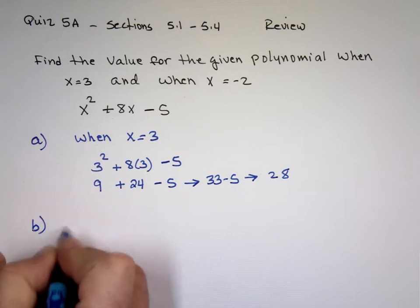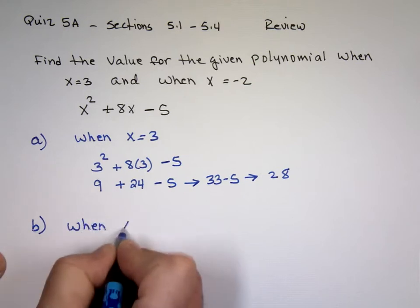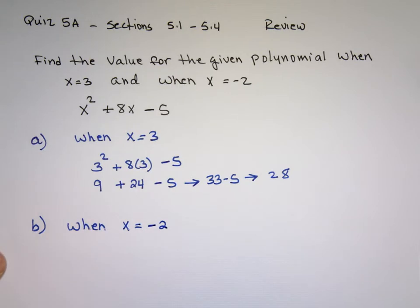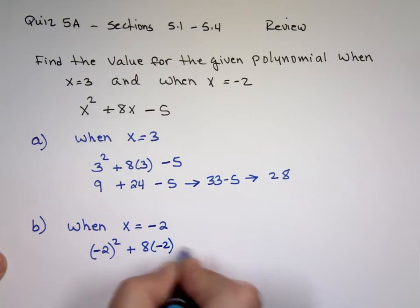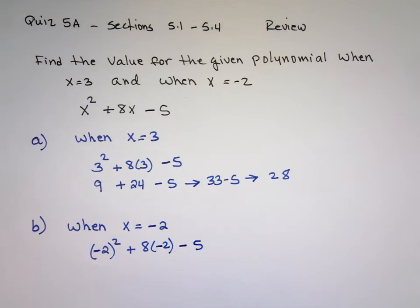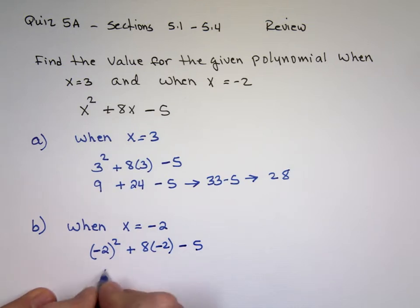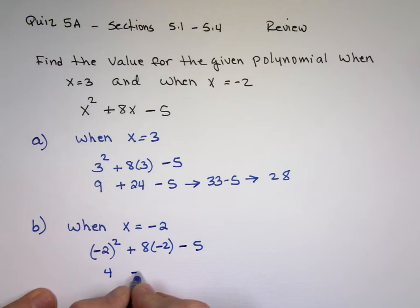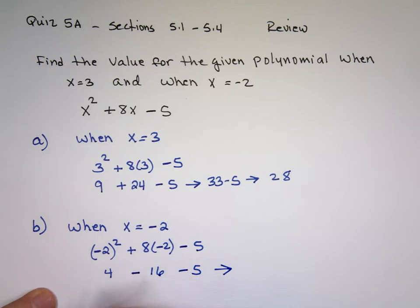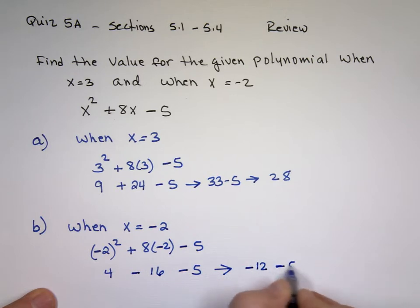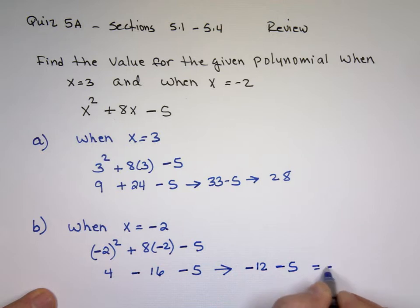Part b: repeat the process now but when x equals negative 2. So it's negative 2 squared plus 8 times negative 2 minus 5. What is negative 2 squared? 4. This will be a minus, right? 8 times 2 is 16, minus the 5. We can take the first two numbers: 4 minus 16, which is negative 12, minus 5. What's negative 12 minus 5? Negative 17.